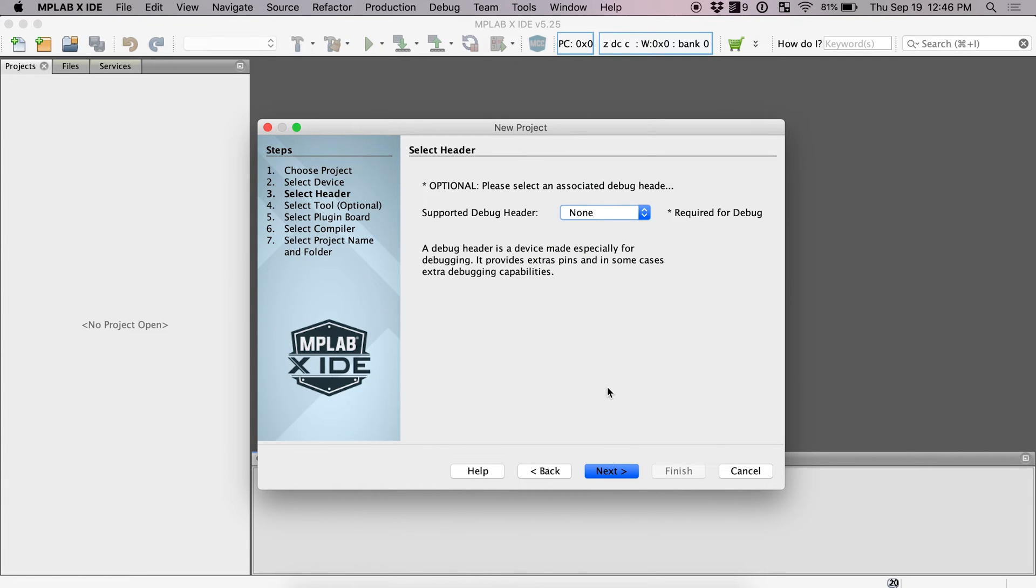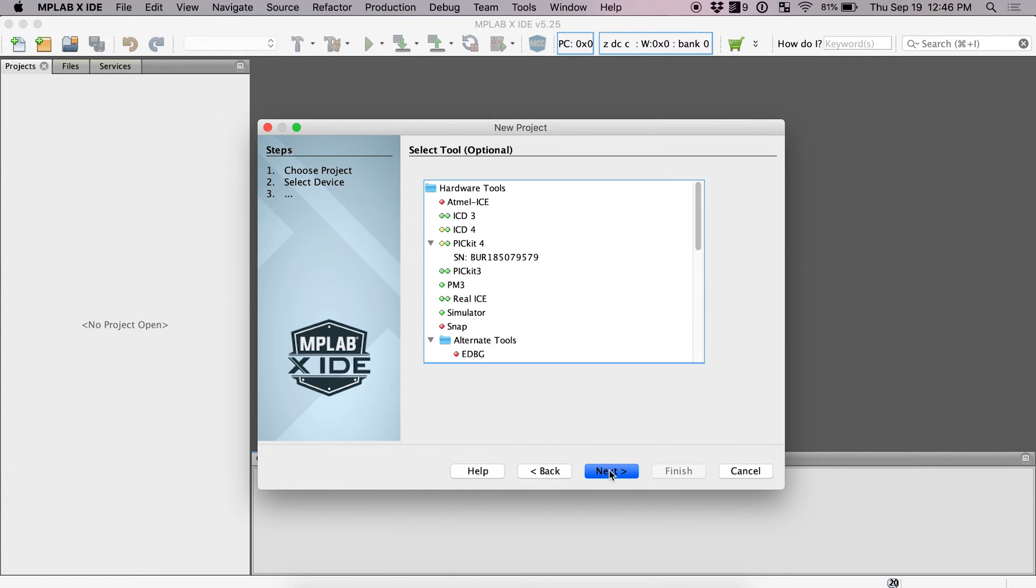Before moving on, we'll skip the supported debug header at the moment. And since I am using a Picket 4, I'm going to use a Picket 4. If you've got a Picket 3 or whatever, you can select that. Obviously if you've got a Picket 2, it's not supported by this and you're going to need to use the other IDE, the older one.